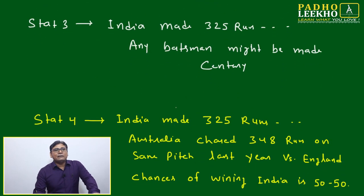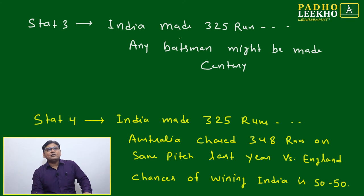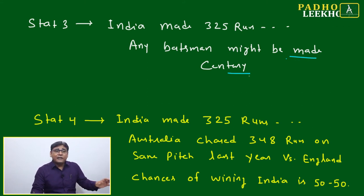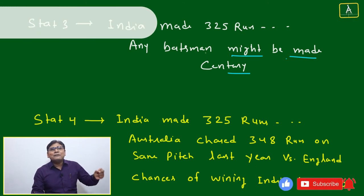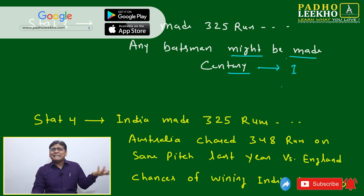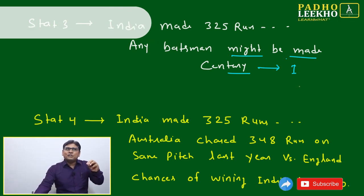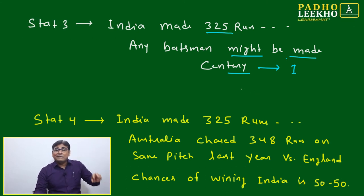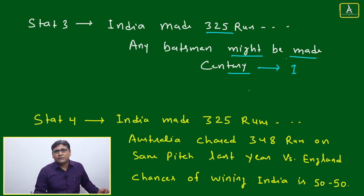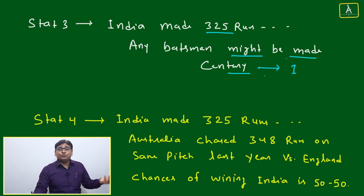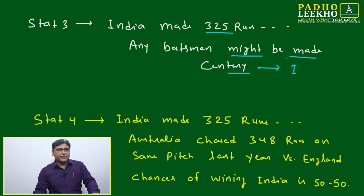Statement three: 'India made 325 runs versus Australia in a tri-series. Any batsman might have made a century.' The word 'might' is used — not 'will' or 'should,' which would be very strong. We are putting a little assumption: 325 is a huge score, so chances are there that someone made a century, but it is not necessary. This is again inference — fact plus a measured assumption.